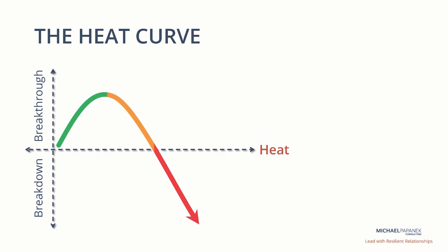The green line on the curve represents the optimal conditions for breakthroughs to occur. However, the orange and then red lines show that there comes a point at which the curve begins a downward spiral leading to breakdowns. This is the point where the heat — be it from tension between different points of view, interpersonal conflict, or extreme emotion — becomes too much for the individuals and the team to handle.